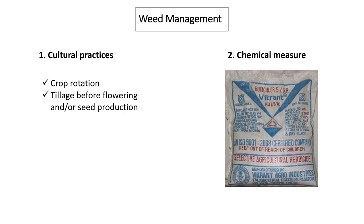Weed management practices are similar to those for the other major weeds already discussed. It can be culturally controlled by practicing crop rotation and tillage before flowering or seed production. It can also be chemically controlled using Butachlor.